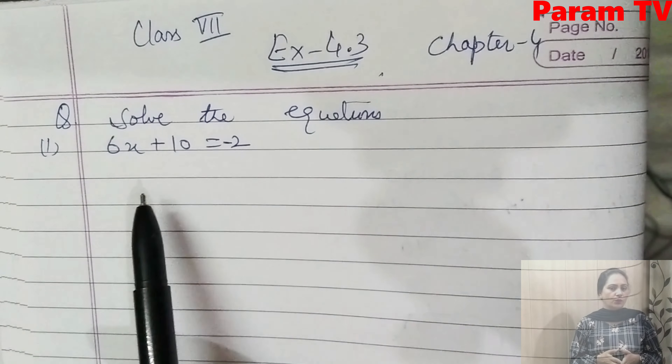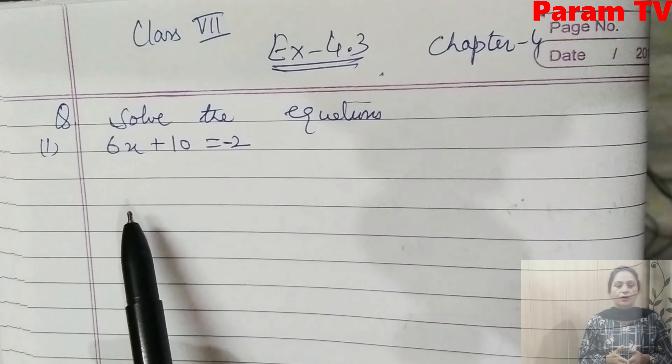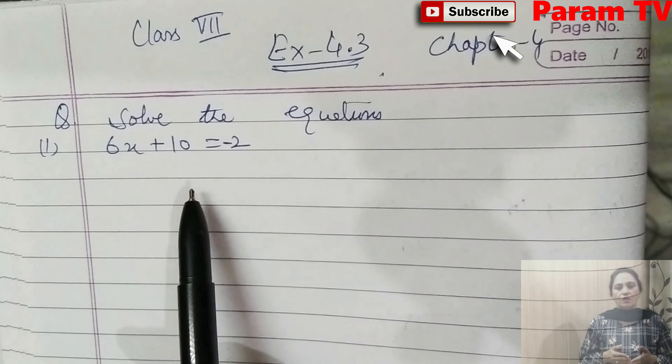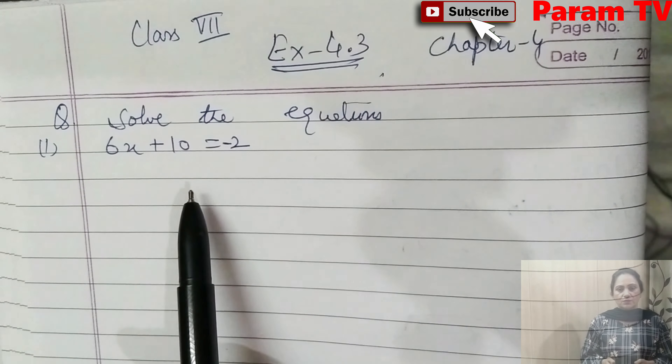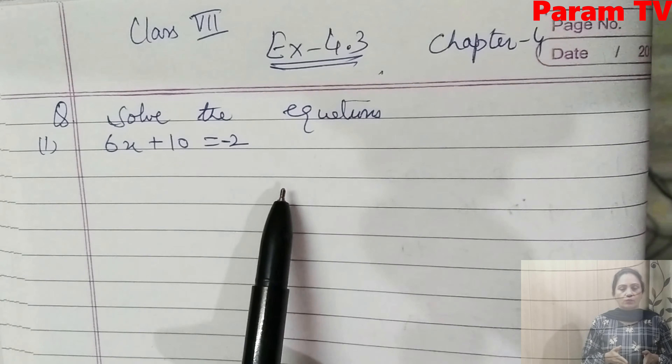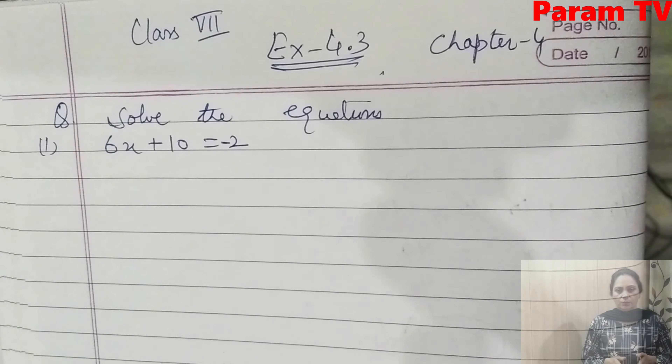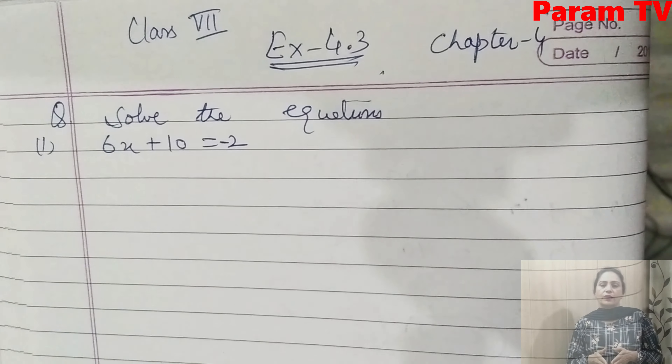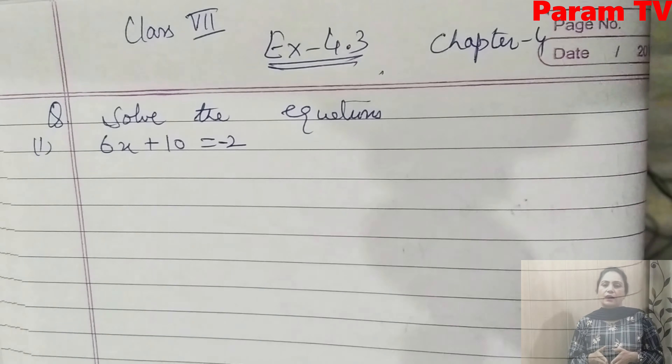Welcome students, let's solve Exercise 4.3, Chapter 4: Simple Equations for Class 7. We will solve the equations. In the last exercise, you tried the trial and error method and mentioned the steps. Now you have to use the transposing method, which we normally use to solve equations.